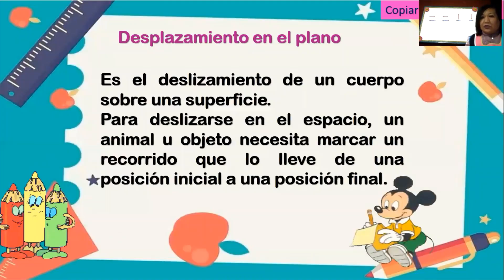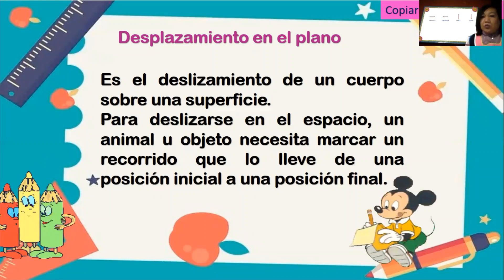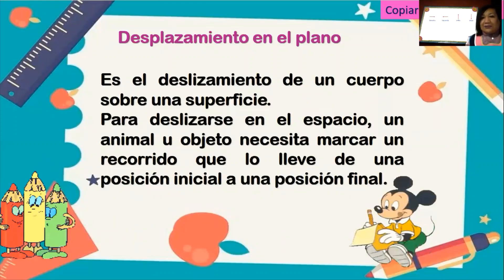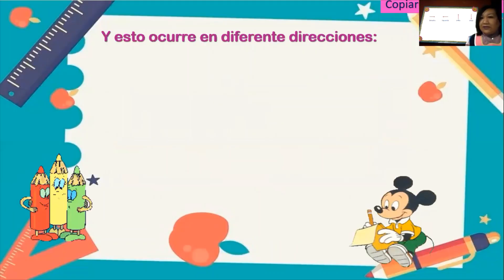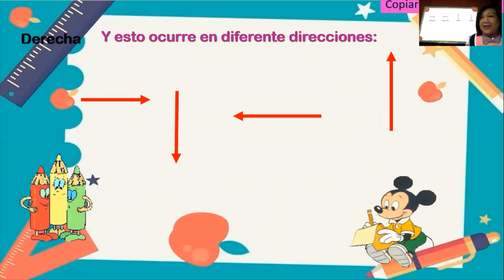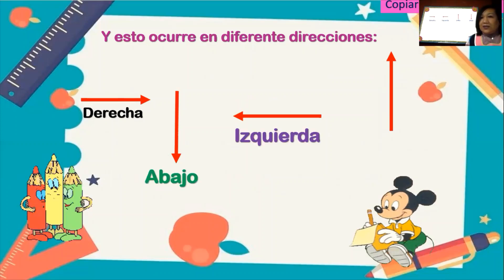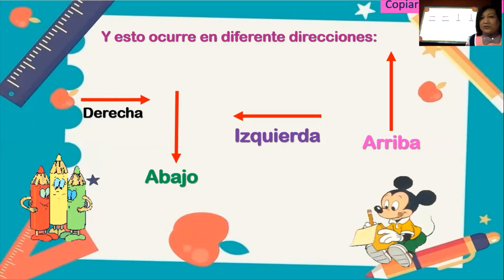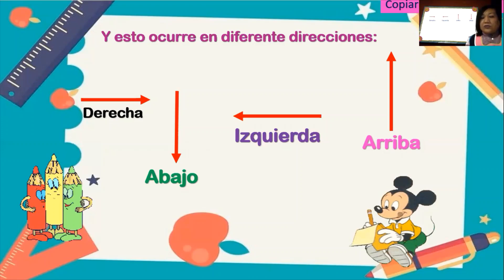Entonces, ¿qué es el desplazamiento en el plano? Es el deslizamiento de un cuerpo sobre una superficie para deslizarse en el espacio. Un animal u objeto necesita marcar un recorrido que lo lleve de una posición inicial a una posición final. Y esto ocurre en diferentes direcciones. Ya sabemos reconocer estas flechas: la primera será a la derecha, luego esta flecha nos indica abajo, esta flecha nos indica a la izquierda, y esta otra flecha nos indica el desplazamiento hacia arriba. Hay que recordar muy bien estas flechas y tenerlas en cuenta para nuestros desplazamientos: derecha, abajo, izquierda, arriba.